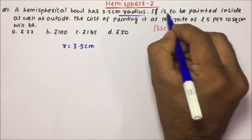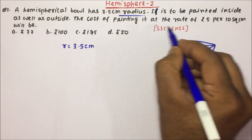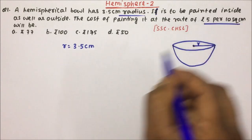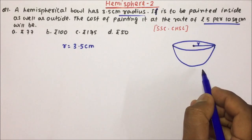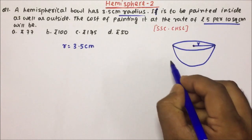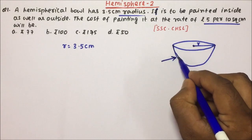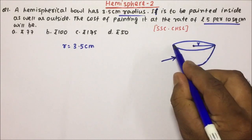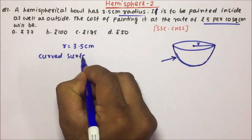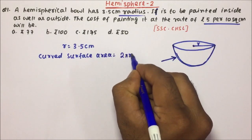It is to be painted inside as well as outside. The cost of painting it at the rate of rupees 5 per 10 square centimeters will be. Now friends, this question is very simple — we just have to understand what the inside and outside surface area is. The curved surface area of a hemisphere is nothing but this outer surface.